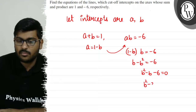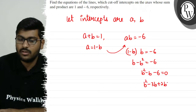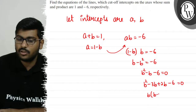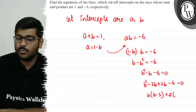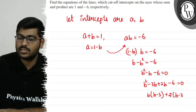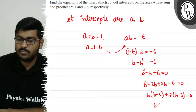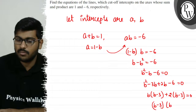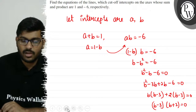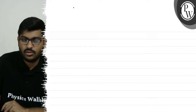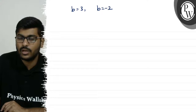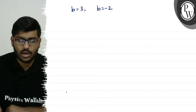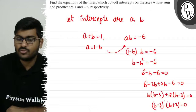We can factor this as b squared minus 3b plus 2b minus 6 equals 0, giving us (b minus 3)(b plus 2) equals 0. So b equals 3 or b equals minus 2.